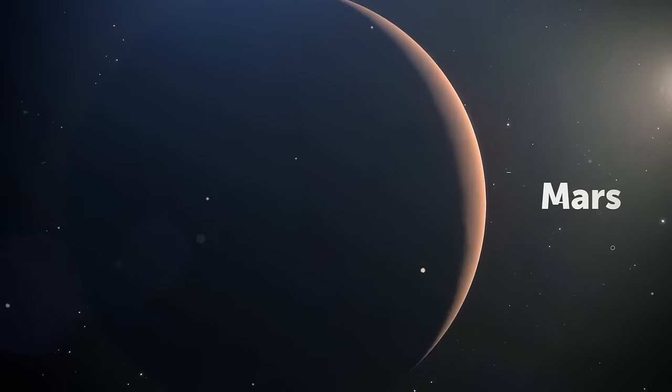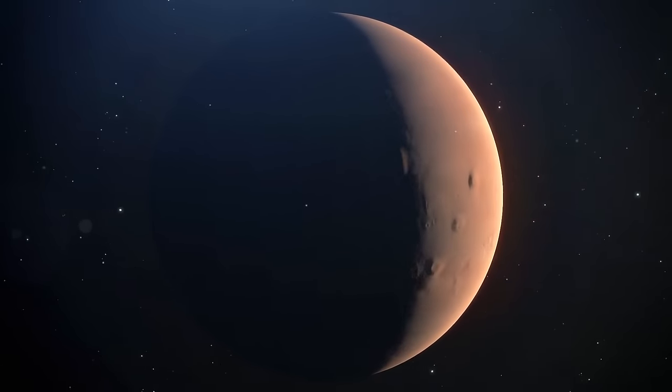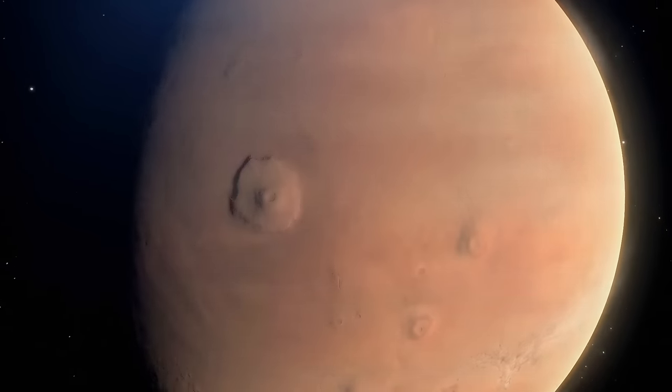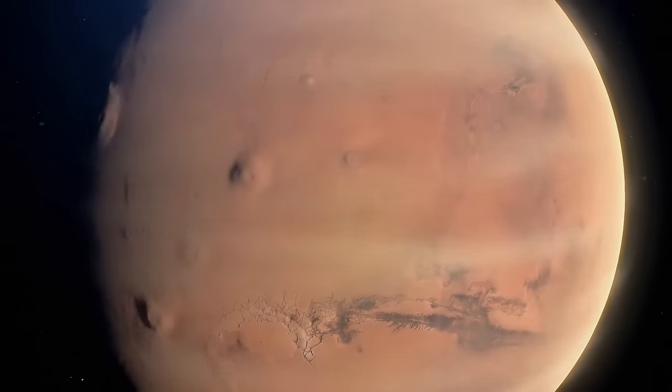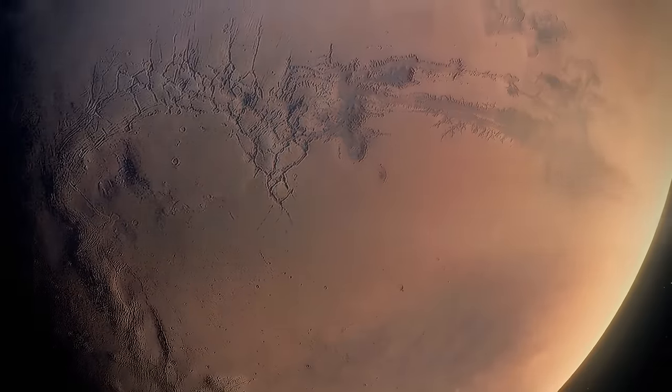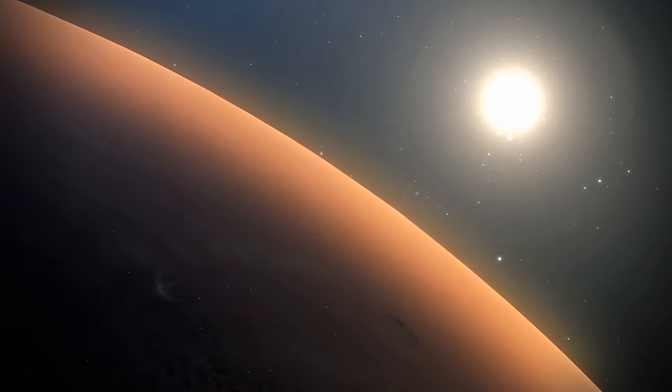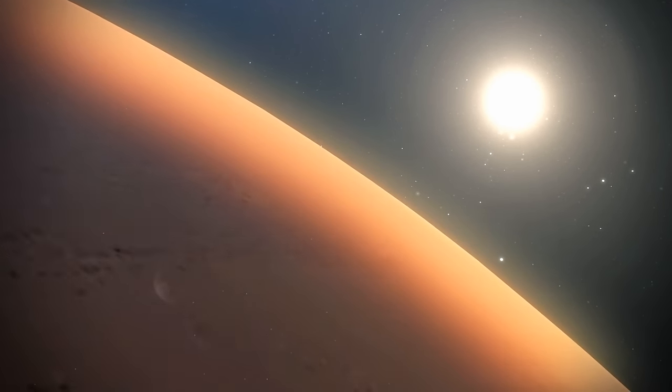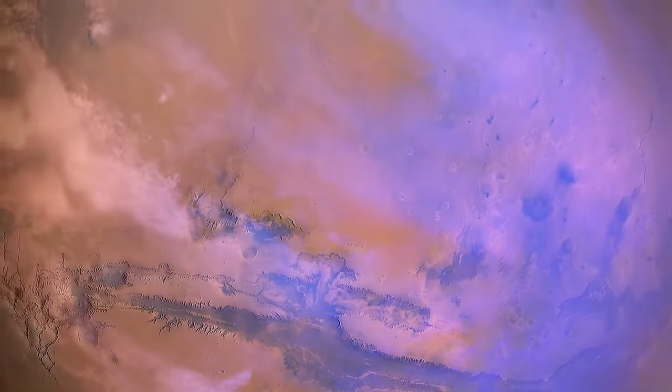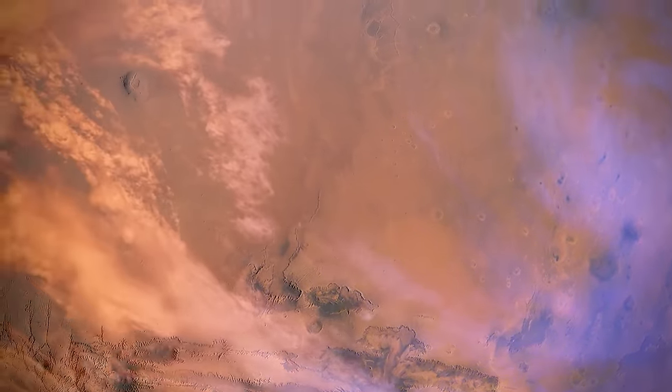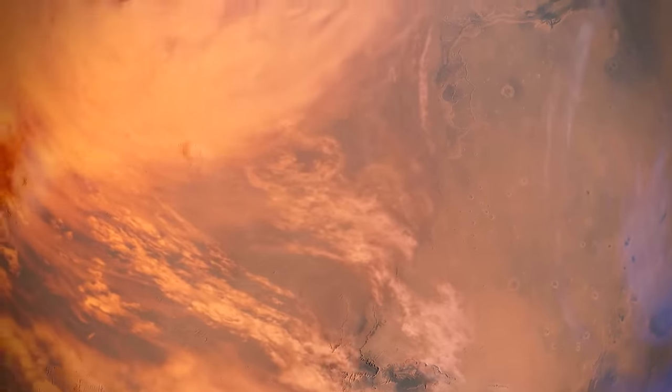Mars has the biggest dust storms amongst all eight planets. When such a storm is raging, it seems like it creates a blanket over the entire planet that lasts for months. One theory that tries to explain why dust storms are so big on Mars says airborne particles of dust absorb sunlight and warm the planet's atmosphere. This creates warm pockets of air. They start flowing toward colder areas, which then generates winds.